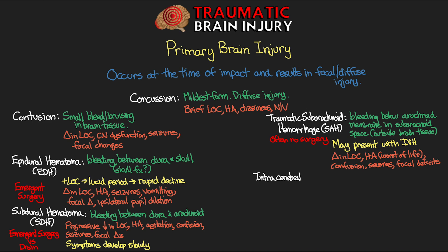The next bleed is something we call our intracerebral hemorrhage — bleeding in the actual parenchymal tissue of the brain. This bleeding can occur in many different places throughout the brain depending on which particular vessel is injured. It's important to know this is not to be confused with an intraparenchymal hemorrhage, or IPH, which is the result of a non-traumatic bleed inside the parenchyma. This bleed is usually associated with severe acceleration-deceleration injuries or penetrating injuries. Symptoms include changes in level of consciousness, headache, focal deficits, and an elevated ICP.